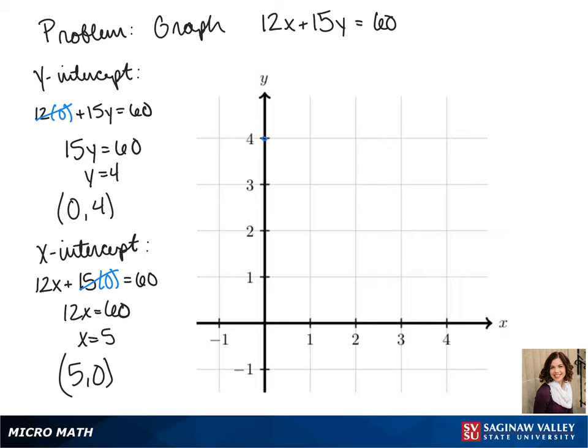We plot those two points, one at (0,4) and the other at (5,0). Then when we connect them, that gives us our line.